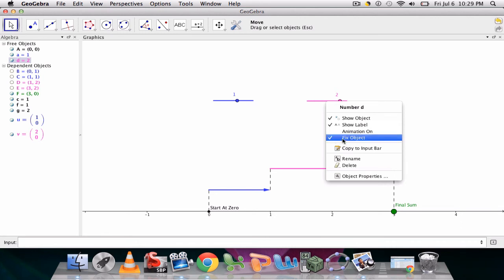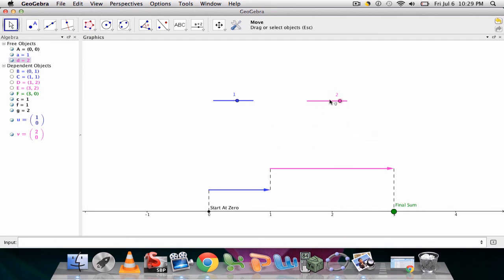You will not be able to move it if it's checked. So you can either right-click the object in the graphics or the algebra view and then check or uncheck fixed object depending on what you want. If it's not checked, you can move it. If it is checked, you will not be able to move it.